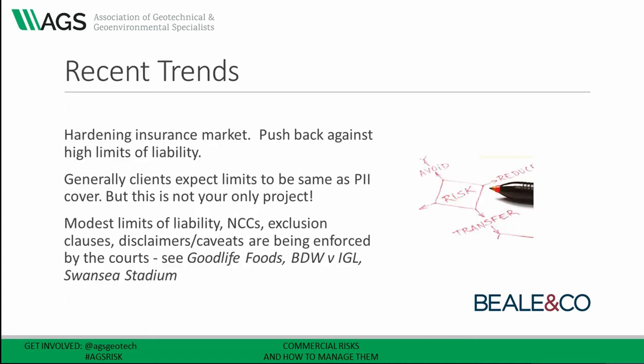Just to end on a note about recent trends. As you're probably all aware, the insurance market is hardening, which means it is even more important that you stand your ground in negotiations with clients and third parties. Generally, clients expect your limits of liability to be the same as your PI cover, but that is simply not appropriate — this will not be your only project, you might have a claim on another project which erodes that limit, and it may simply be disproportionate to the size of the fee you're receiving. A good way of arriving at an appropriate financial cap would be to have a multiple of your fee, be it 10 times or 20 times — and that's likely to be a lot less than the limit of your professional indemnity insurance.